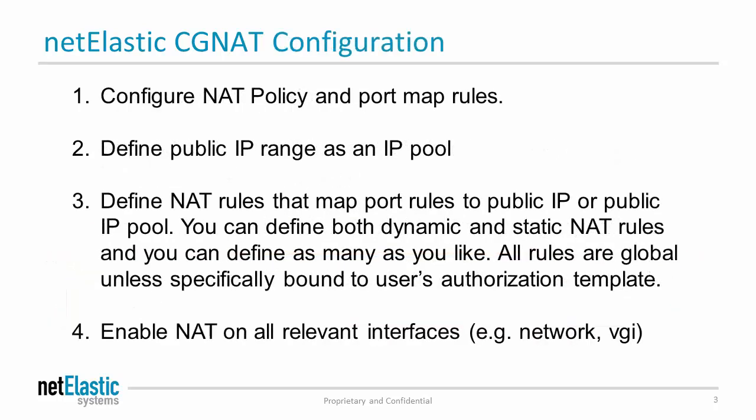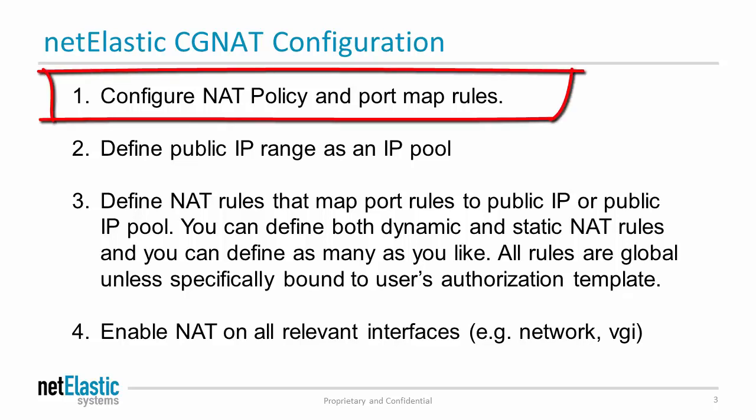Now let's take a look at CGNet configuration. First, we configure NAT policy and port map rules. The NAT policy is a global policy that applies to all NAT rules. The port map rule defines the size, range of ports, and also the manner in which ports are allocated.